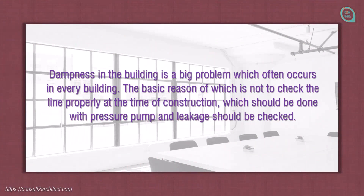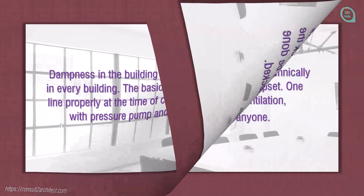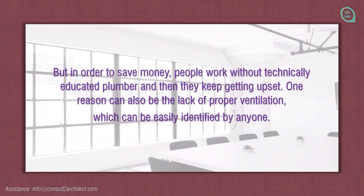Dampness in the building is a big problem which often occurs in every building. The basic reason is not checking the lines properly at the time of construction, which should be done with a pressure pump to check for leakage. In order to save money, people work without a technically educated plumber and then keep getting upset. Another reason can also be the lack of proper ventilation, which can be easily identified by anyone.